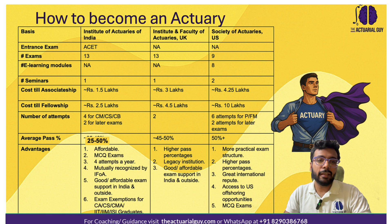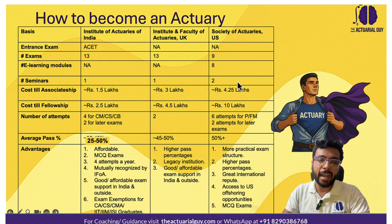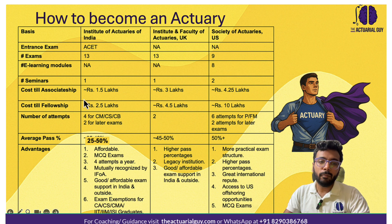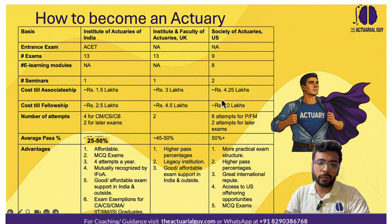The first level is associateship. For IAI and IFOA, that means passing 10 exams. For SOA, you pass a certain number of exams and complete e-learning modules to become an Associate of the Society of Actuaries. The cost of becoming an associate is significantly higher for SOA. Note that in the IAI and IFOA cost figures, I've included the annual membership fee assuming it takes about four years to become an associate. The cost through to fellowship is also highest for SOA.